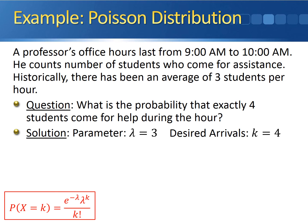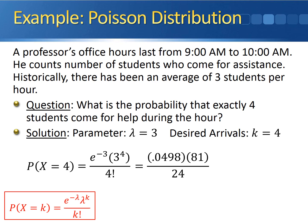Let x represent the number of students who come for help during office hours. We're looking for the probability that x equals four. Plugging into the equation, we get e to the negative three, times three to the fourth, divided by four factorial. Working out each piece, we get 0.0498 times 81, divided by 24. Simplifying gives us a final probability of 0.1681. So if an average of three students come to office hours, the probability that exactly four students show up during that one-hour period is 0.1681.